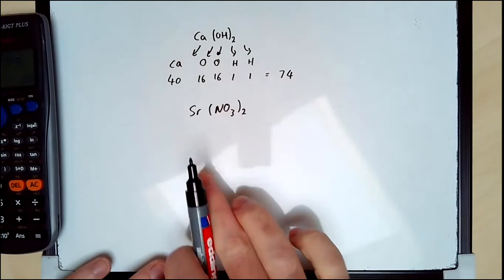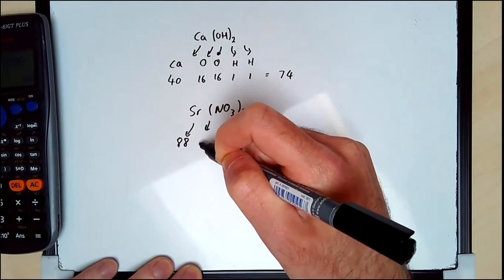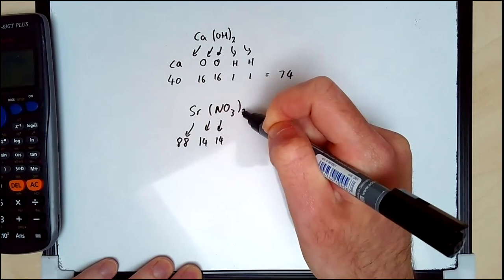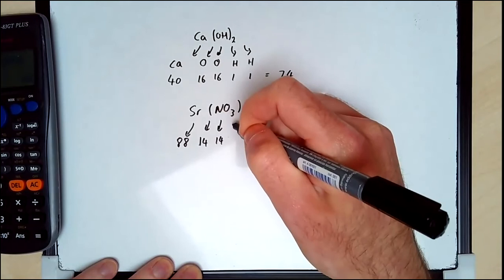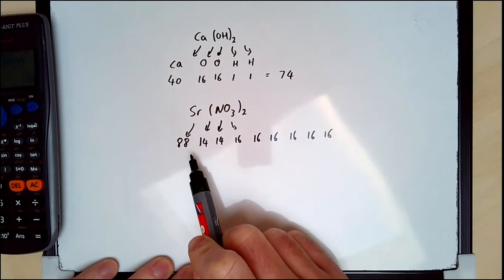So I've only got one strontium here. Remember that 2 only goes on what's in the brackets. So I've got 88. I've got two nitrogens, so nitrogen on my periodic table is 14. And I've got six oxygens. I'm just going to write 16, 16, 16, 16, 16, 16. That's the one strontium, the two nitrogens, and the six oxygens.